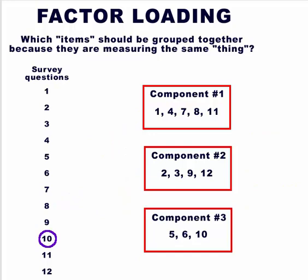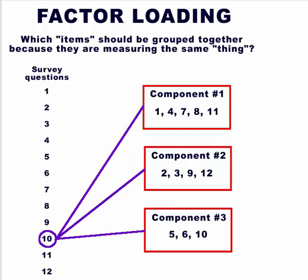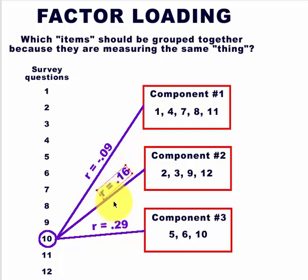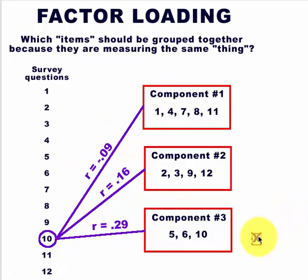You might also run into something like this. Here's question number ten — we do the three correlations between the three new components and get different numbers: -0.09 for the first, 0.16 for the second, and not greater than 0.4 for the third either. So question ten really doesn't correlate very well with any of these components. You would want to think about not using that question — just remove it out entirely, because it doesn't correlate with any of the new factors.